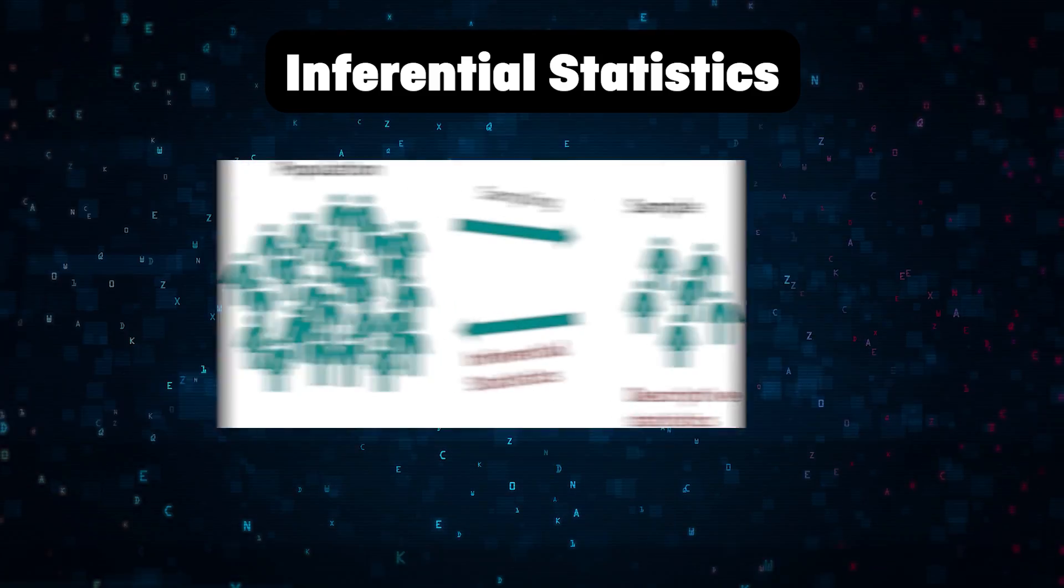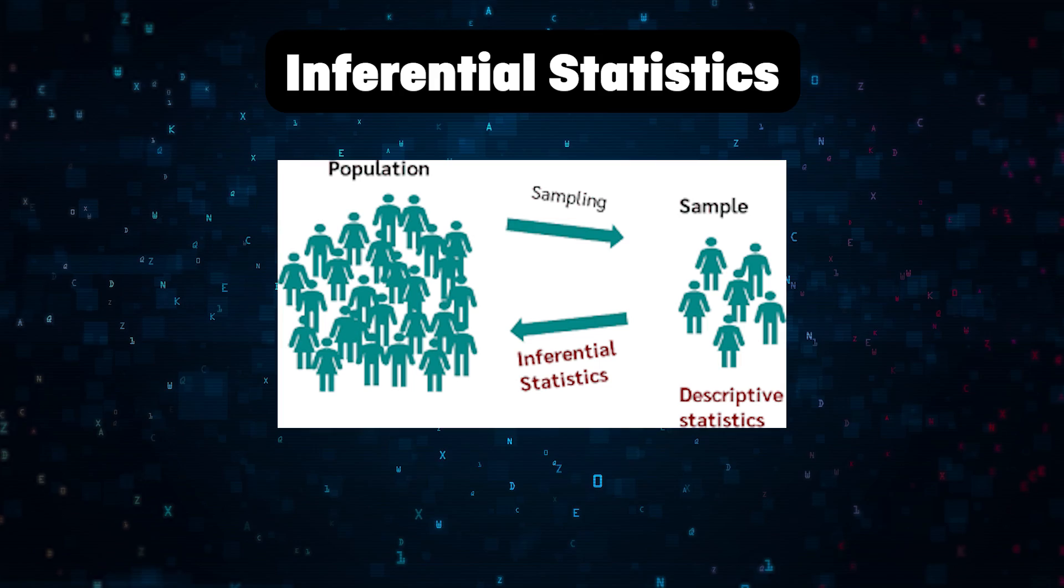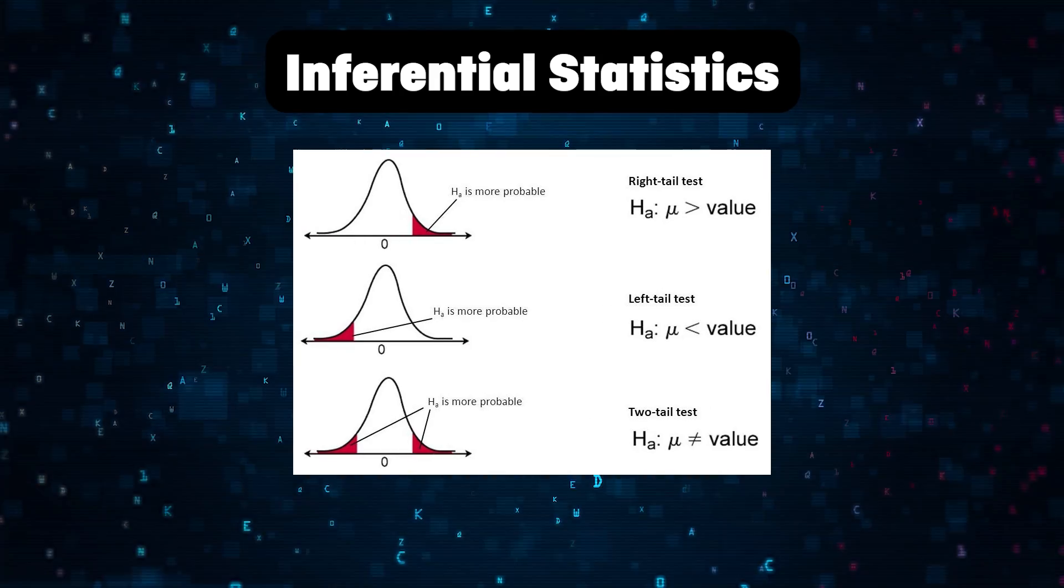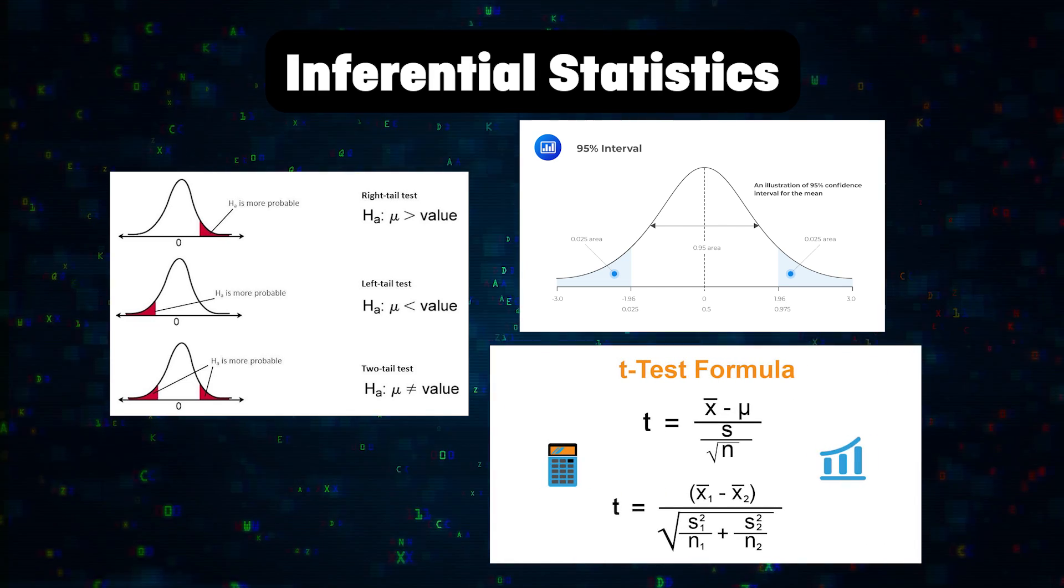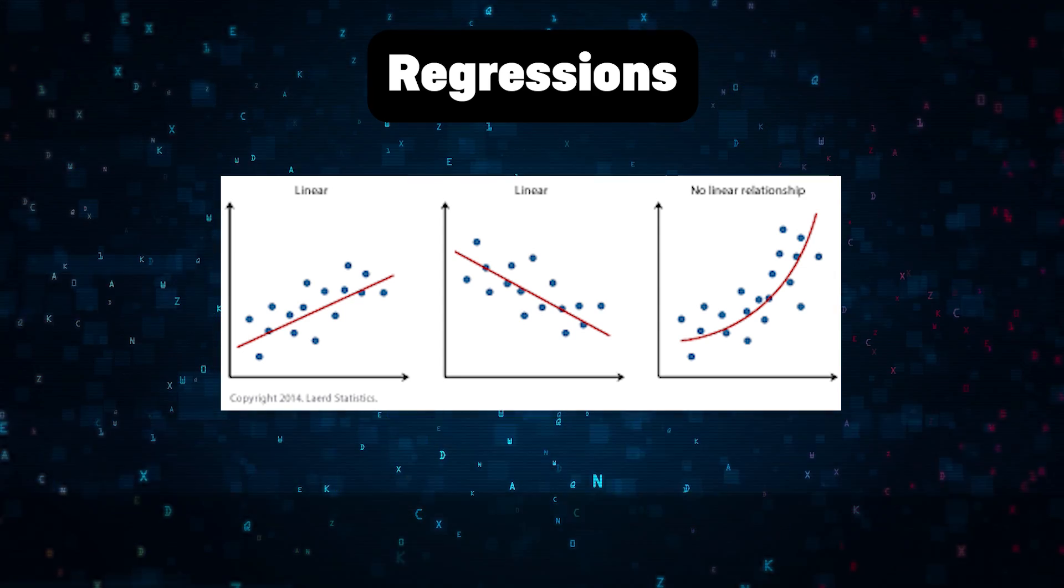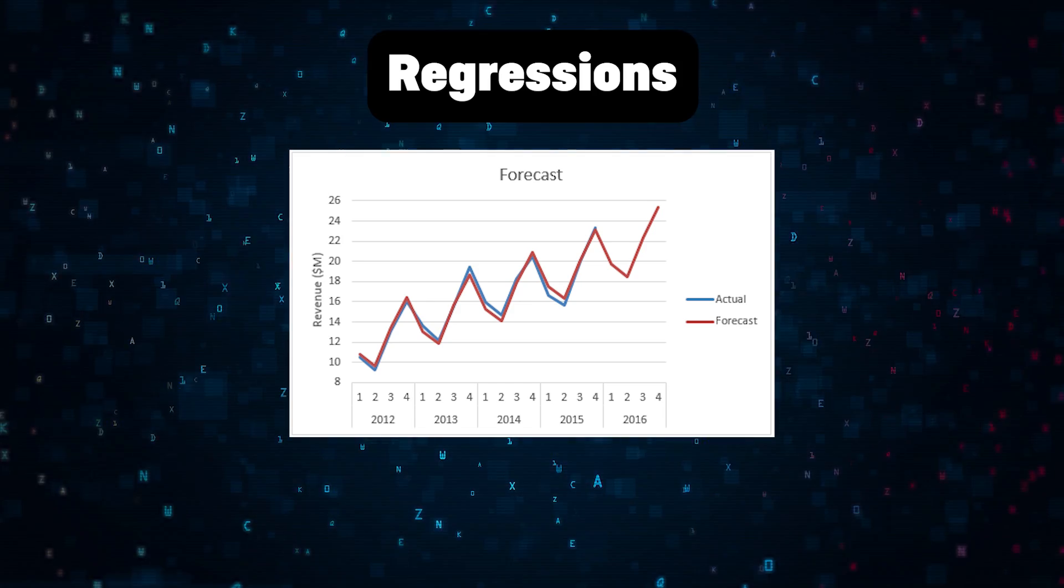Inferential statistics. This involves making inferences about a population based off of sample data. It's basically what hypothesis testing is, confidence intervals, and t-tests to make generalizations and predictions of your data. Regressions: this is basically to understand the relationship between the features in your data set. It's commonly used for forecasting.